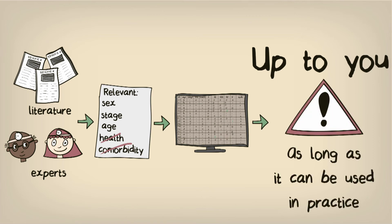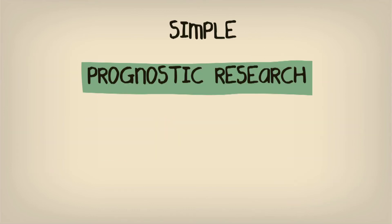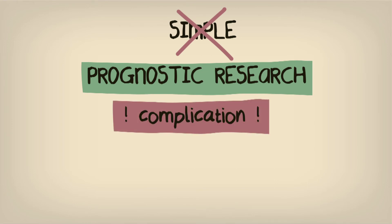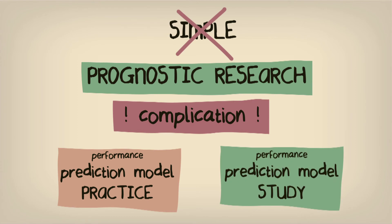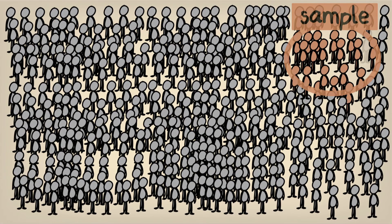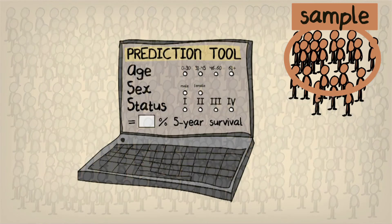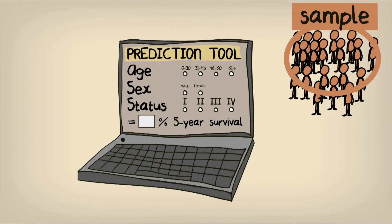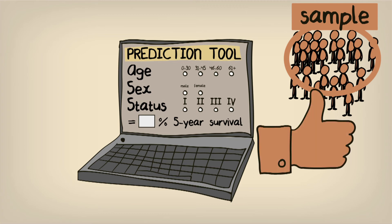Prognostic research is never simple, and there is one complication that we should always address. Most of the time when a new prediction model is applied in practice, it performs more poorly than it did in the original study. Even the best prognostic studies are limited in that they cannot include everyone. The data used to develop your prediction rule is only based on a small representation of the whole clinical domain. So if you have built your model correctly, it will be very well tuned to the group of people in your study, but that may not be the case for new people from slightly different populations.